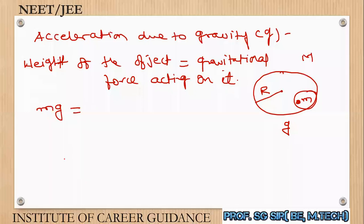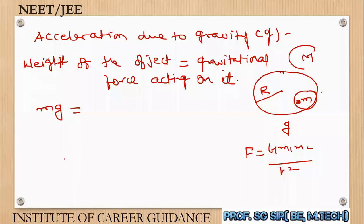Now we will calculate the gravitational force here. Gravitational force means F = G·M₁·M₂ / r². We will apply this formula using the mass of Earth and the mass of that object. So it will be capital G, mass of Earth, mass of that object.